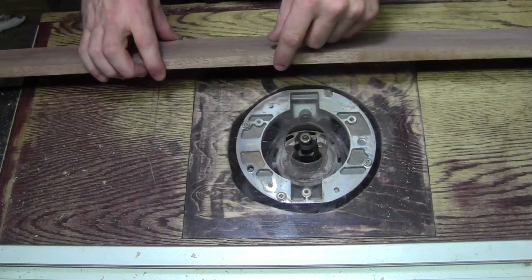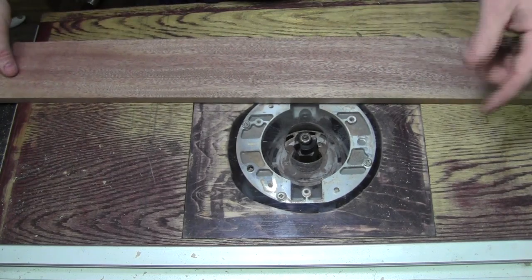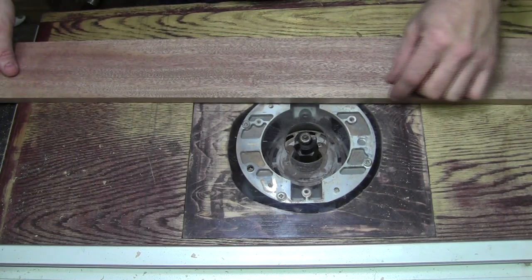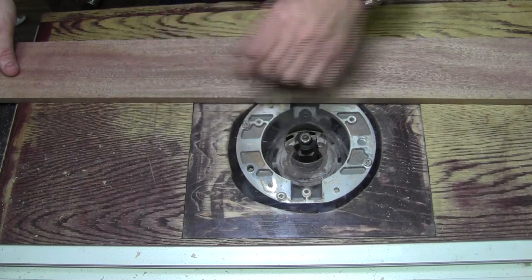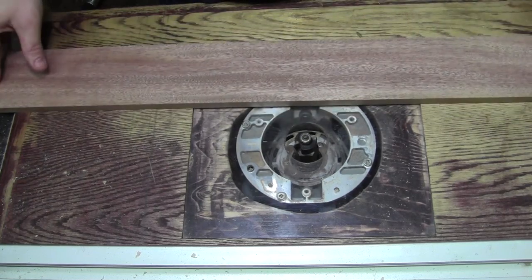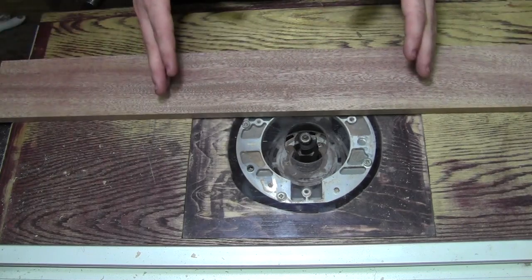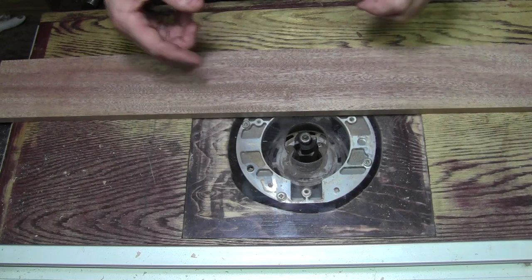Okay guys, for the next process I'm going to create a small rabbet on the full length of this board. Then I'm going to take it over to the table saw and rip my individual frame pieces, bring it back over here to the router table, make another rabbet, rip that piece off, so on and so forth until I get all of my frame pieces.